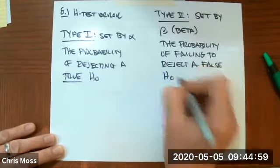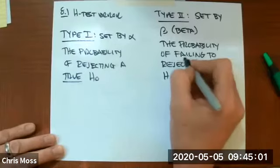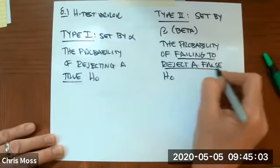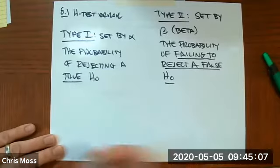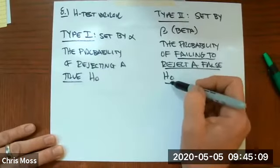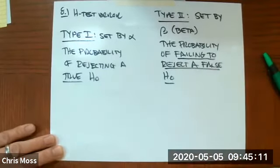It's the probability of failing to reject a false null hypothesis. So we're going to keep a null hypothesis even though it is not true.